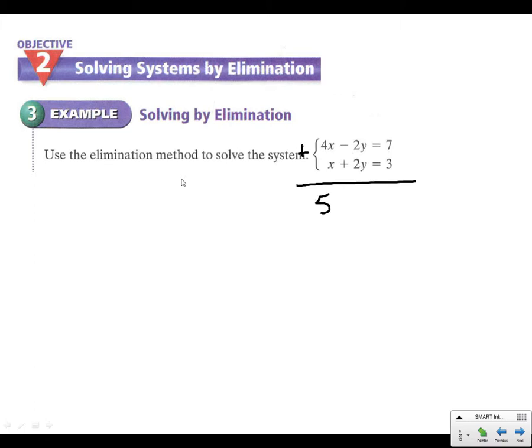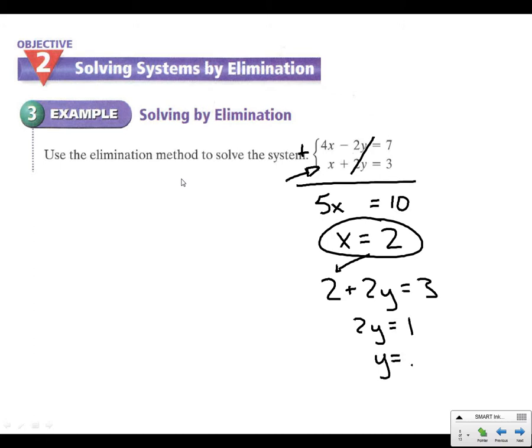What we get to do now is eliminate by adding straight down. 4X plus X is 5X. Negative 2Y plus Y goes away. And we get 10. Look at how quick that is. If elimination works, it's really fast and easy. X equals 2. We've got an answer. We just need to go back in. We can pick any equation. Let's use the easier one. 2 plus 2Y. Just plugging 2 in for X. Equals 3. So 2Y equals 1. So Y equals 1 half. That's our answer.